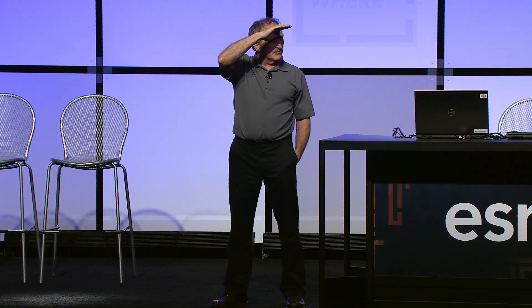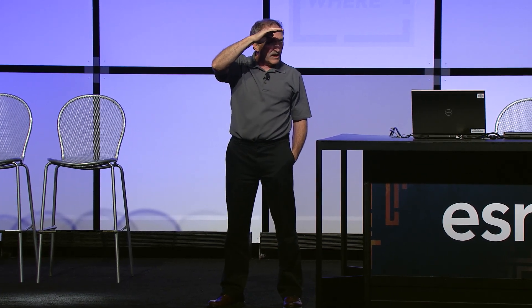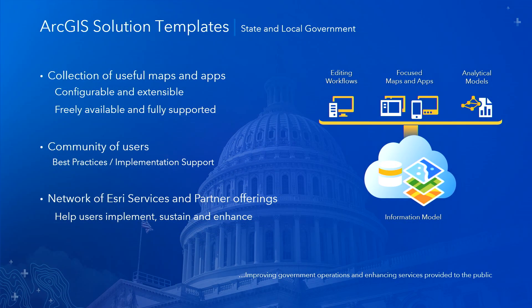For the rest of you, did you know that ArcGIS comes with a set of solutions that can help you manage your emergencies and do a lot of different things? What I'm going to do is introduce you to some of those this afternoon so you can know about them and use them. They're available to you — you've got a lot of tools you can leverage. Solutions are a collection of useful maps and apps. You can configure them, extend them, or just deploy them out of the box, ready to go. Put your data into them and manage your events. They're freely available and supported through tech support, so there's no additional charge.